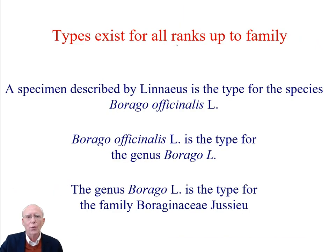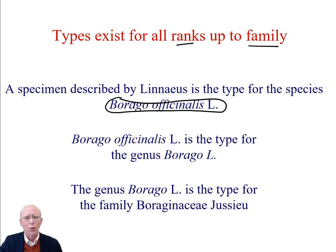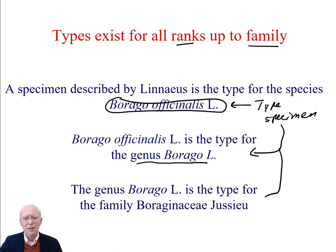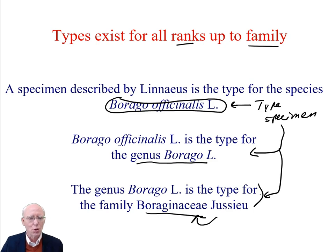Types exist for all ranks up to family. Linnaeus described the species Borago officinalis, and there is a type specimen for this. That type specimen is also the type specimen for the genus Borago, and that same specimen is the type specimen for the family Boraginaceae. It might seem odd to have a single type specimen for a whole family of plants — sometimes thousands of plants — but that's how nomenclature works: a single type specimen collected by Linnaeus.